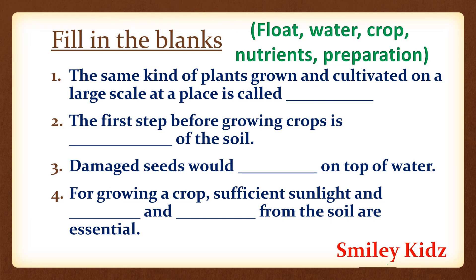Select the correct word from the list and fill in the blanks. First one: the same kind of plants grown and cultivated on a large scale at a place is called Crop.